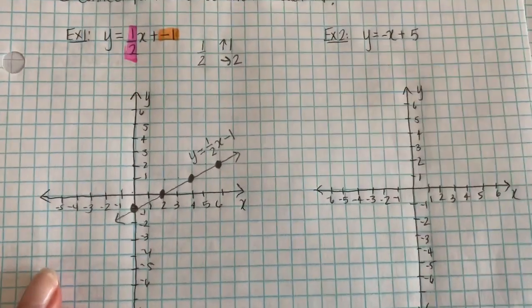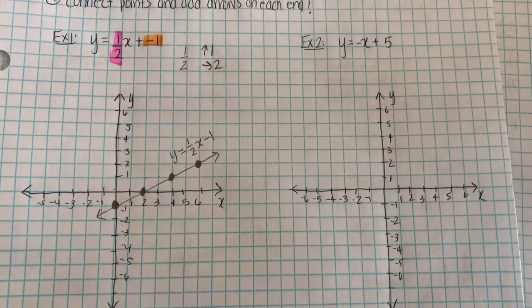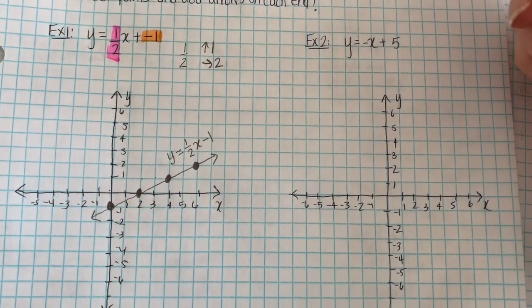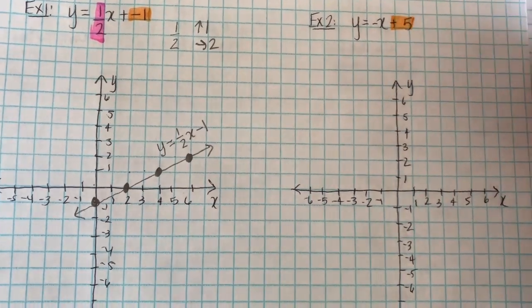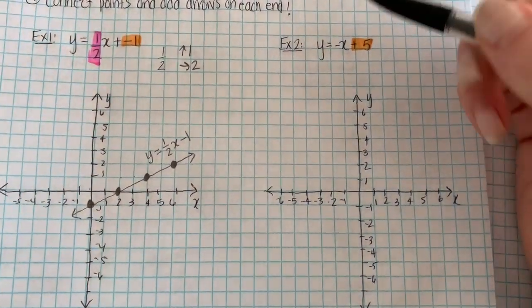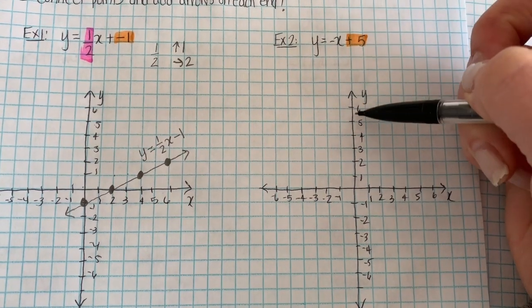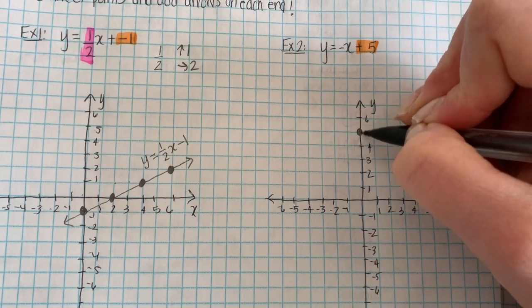Let's look at a second example here, which is a little bit different. In this case, the first thing I do is find my y-intercept, which is the number after x. In this case, it's positive 5. So to begin, b is where we begin. I go to the y-axis and find that number, 5, and place a point right here.